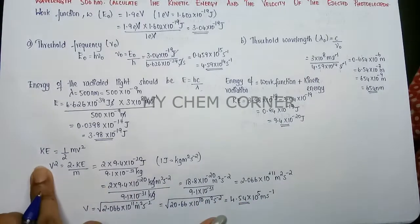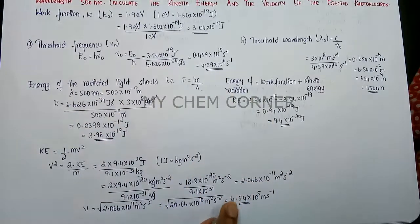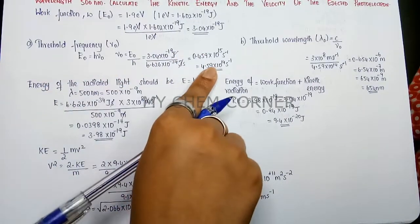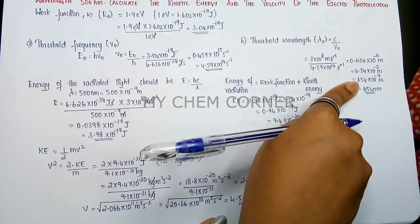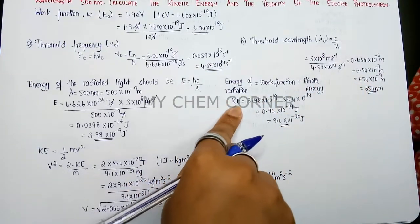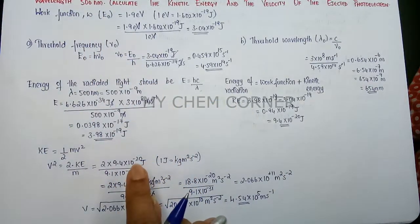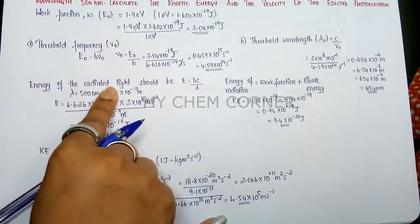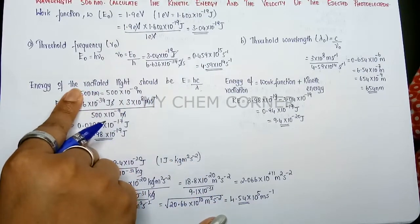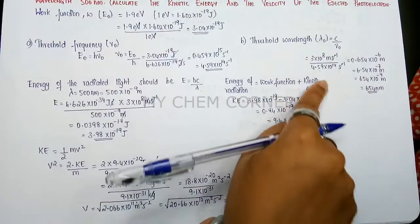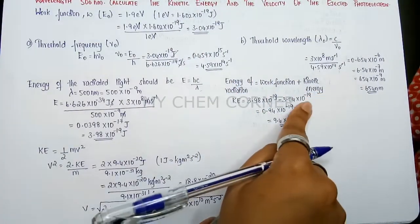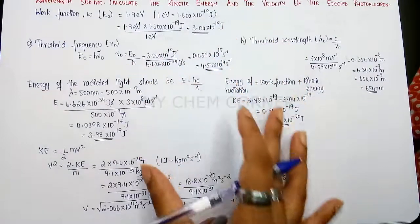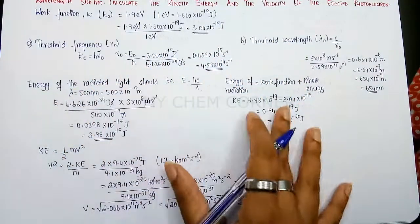So we have calculated all four values. Using the work function in joules, we calculated threshold frequency; from that, threshold wavelength. Using 500 nm, we calculated the energy of the radiated light; from the relationship between radiated energy and kinetic energy, we found KE; and from KE we calculated velocity. Though the problem looks big, breaking it down step by step makes it easy.